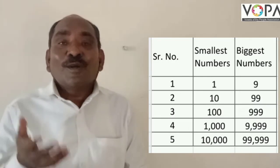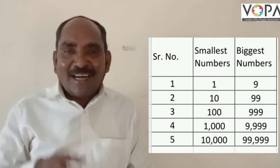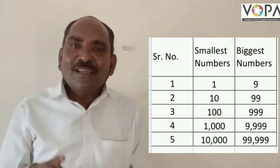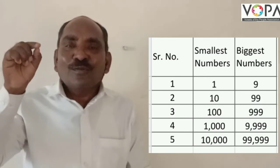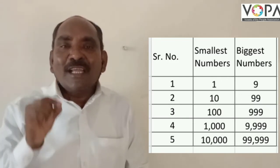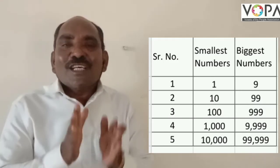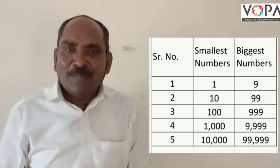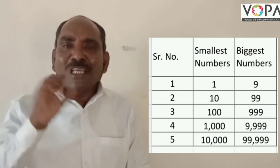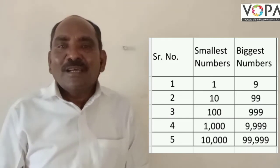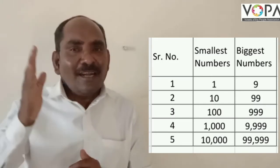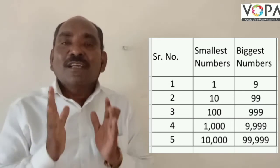Now, which is the process to get the 5-digit number? Yes, correct. You add only 1 to 9999. So the smallest 5-digit number is 10,000. And the biggest 5-digit number is 99,999.